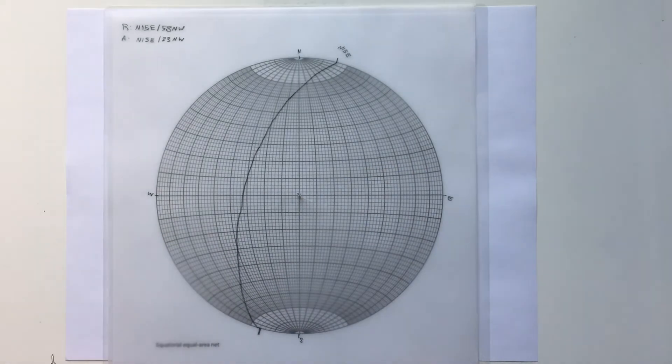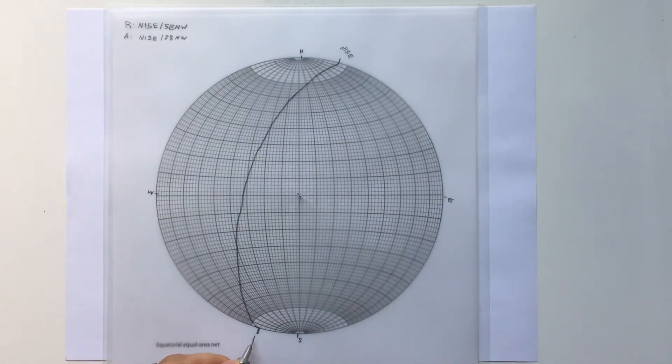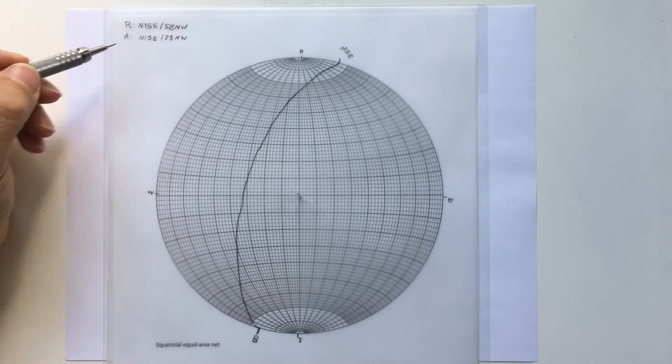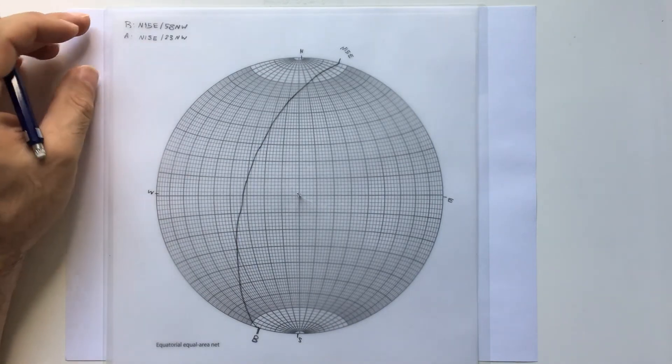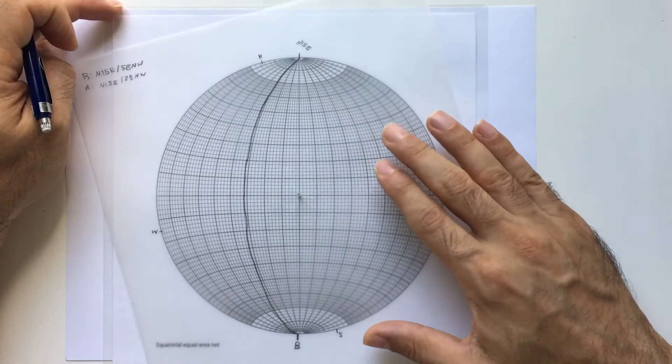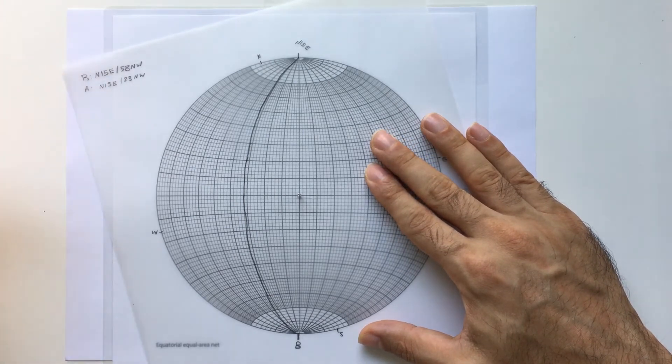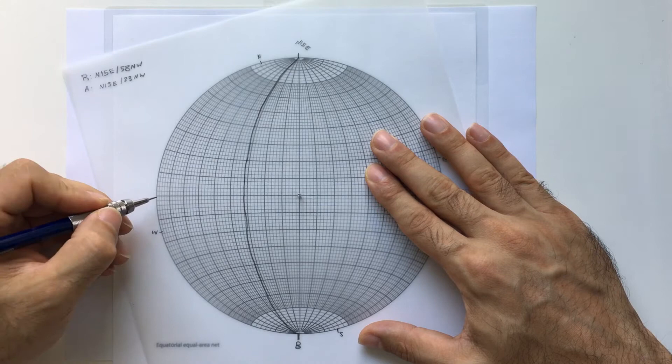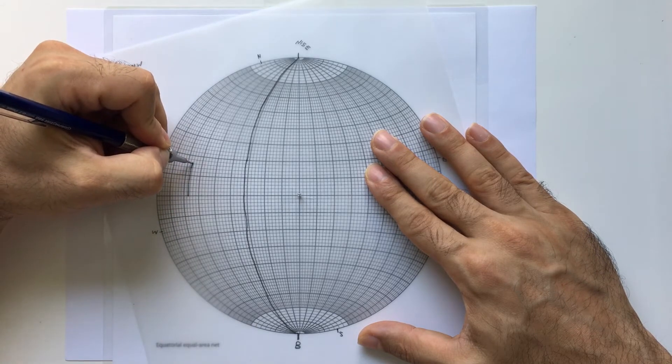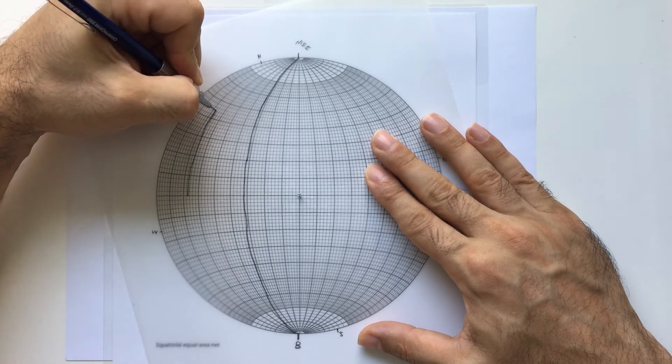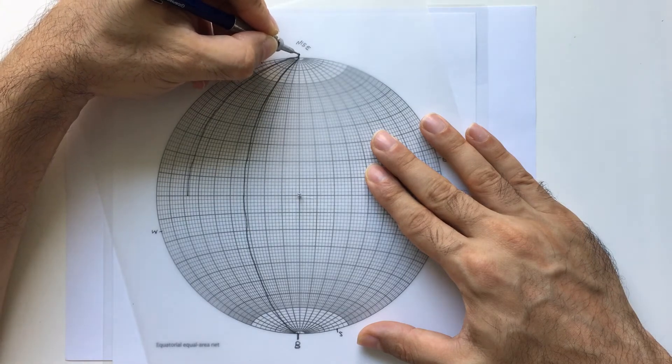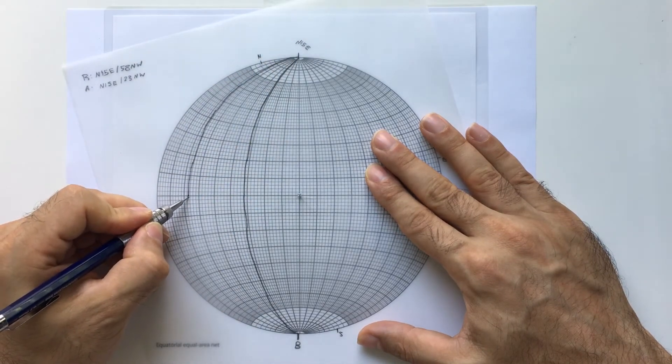I'm going to mention this is B. Now for A, again the strike is N15E and the dip is 23 degrees. Let's do it again. This is N15E and 23 northwest. The same thing: 10, 20, 23. The strike of A and B is exactly the same, but the dip angle is different.